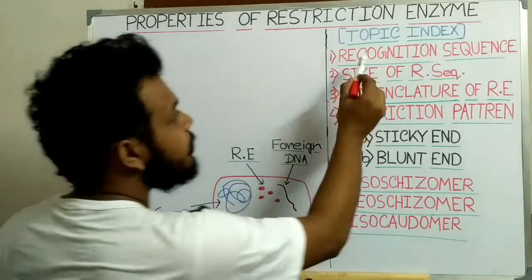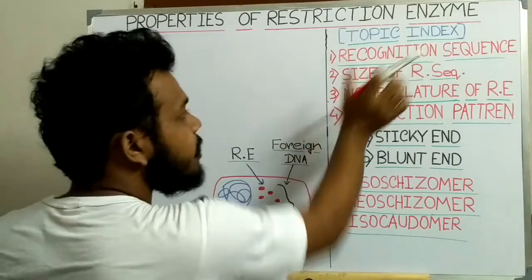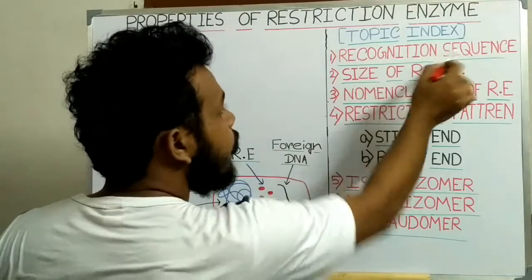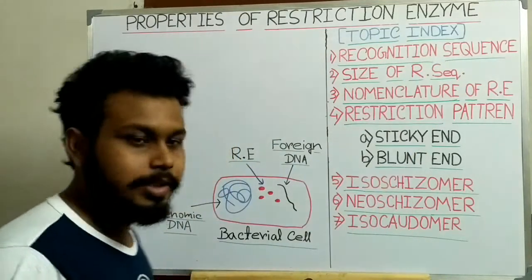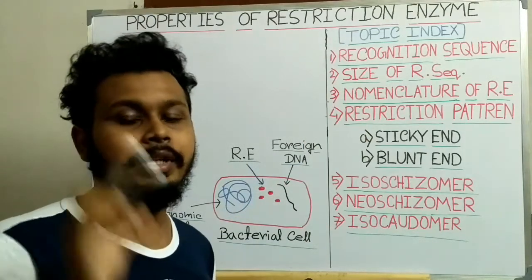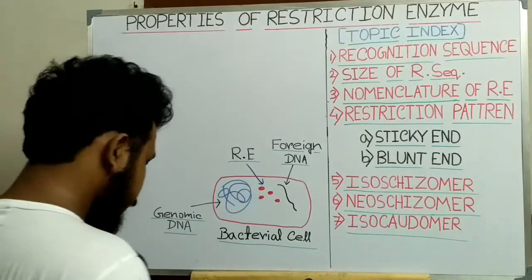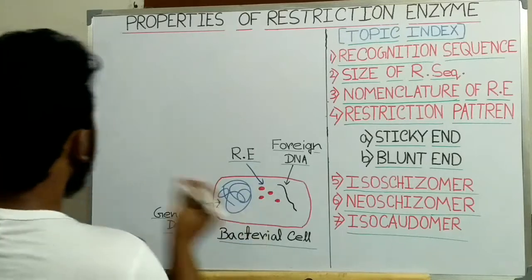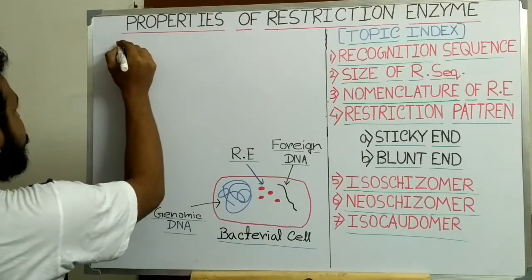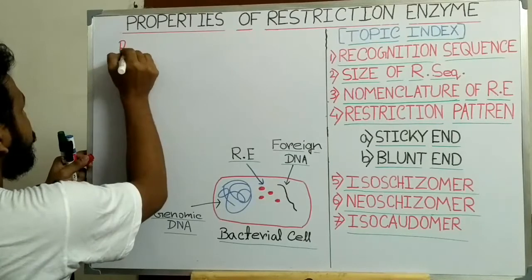So this is the role of restriction enzyme. Now to cut or cleave this foreign DNA, at first this restriction enzyme has to recognize a particular sequence, and that sequence is called the recognition sequence. So this is my first topic, and now I will discuss about the recognition sequence. This recognition sequence has three properties.